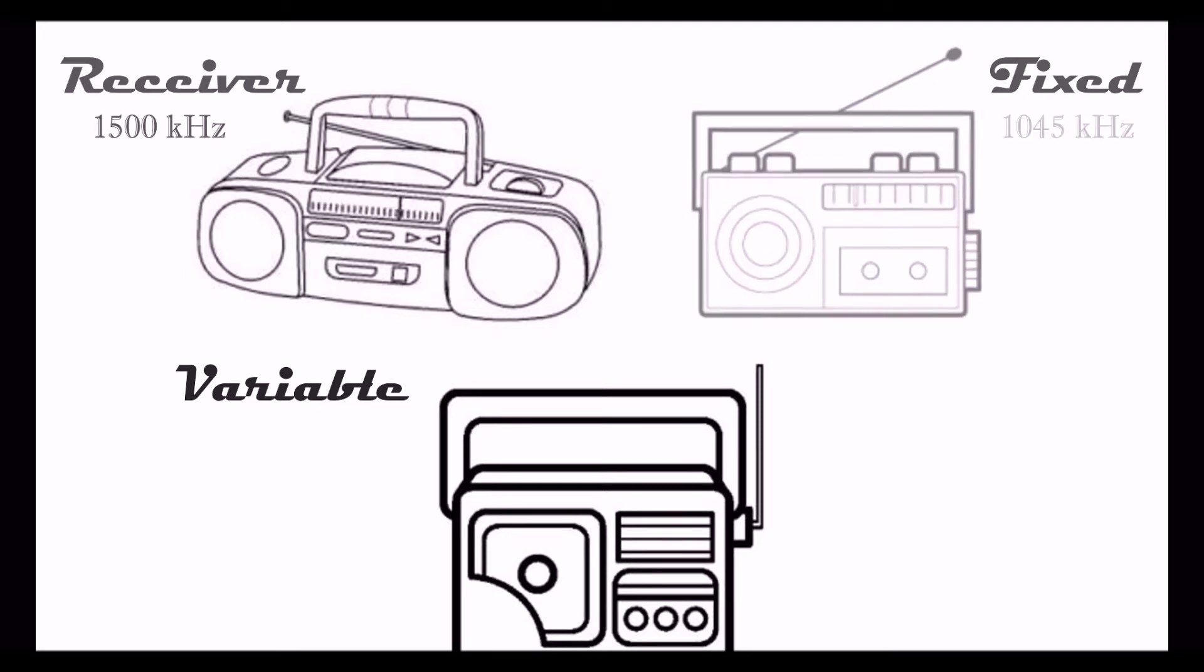Next, tune your fixed radio to approximately 1045 kilohertz. As you approach 1045 kilohertz, you should hear a silence in your receiver radio.